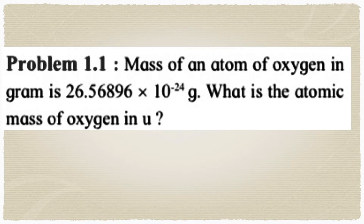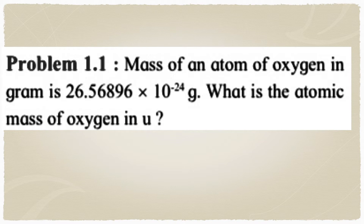The first problem: the mass of an atom of oxygen in grams is 26.56896 × 10⁻²⁴ grams. What is the atomic mass of oxygen in U? First, understand what is given: the mass of an atom of oxygen in grams is 26.56896 × 10⁻²⁴ grams, and the atomic mass of oxygen is asked in U.